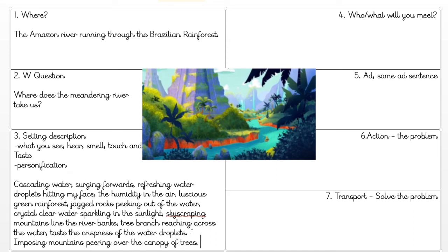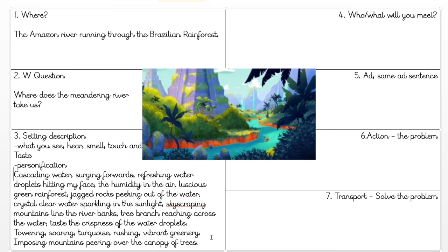What I might now go and do is add a few more single adjectives and single verbs: towering, soaring for the mountains on the riverbank. We could have turquoise for the water. We could also have rushing - the water's rushing through. You could have vibrant greenery as well for what's around us.